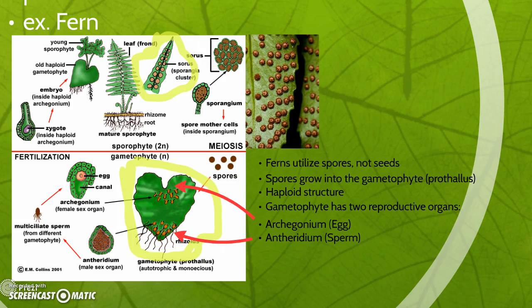Without the water, the sperm cells would not be able to reach the egg cells, and there would be no sexual reproduction, which would mean the cycle would not be able to continue, and therefore the fern would not exist. That is why pteretophytes like ferns live in damp environments. I hope this helps.